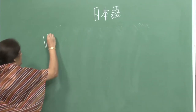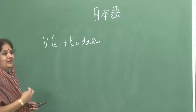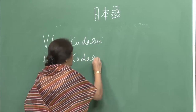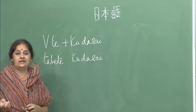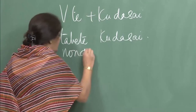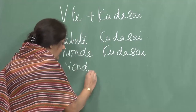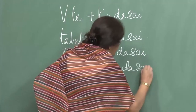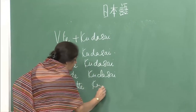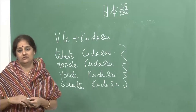We have done verb in te form plus kudasai — tabete kudasai, please eat; nonde kudasai, please drink; yonde kudasai, please read; suwatte kudasai, please sit. Now how would you say please do not do this action?